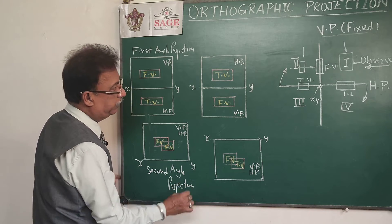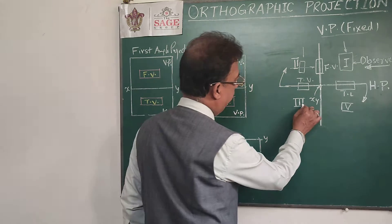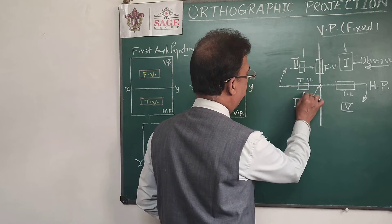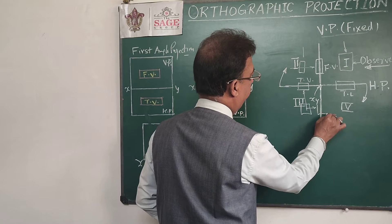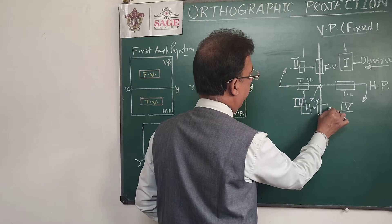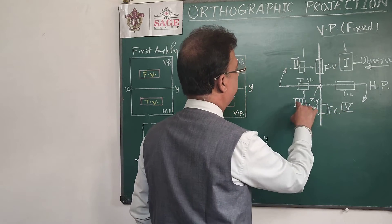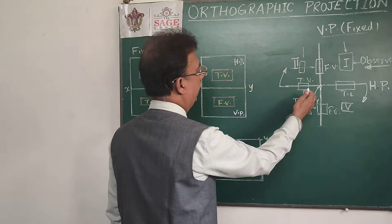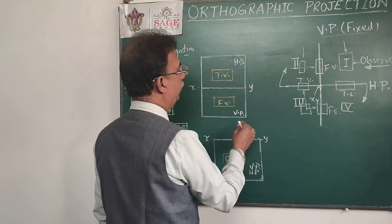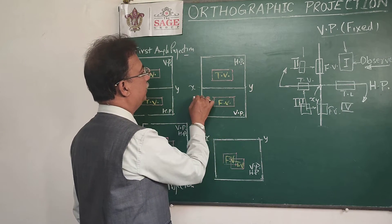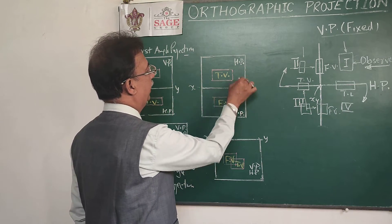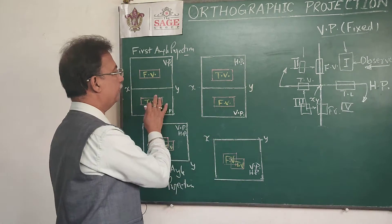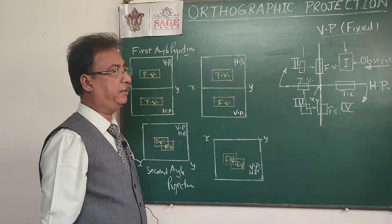When the object is in the third quadrant, the top view will be on the VP. This time the rotation is upward, so the HP goes up and the VP is below it. The layout becomes: reference line, then HP, then VP — with top view and front view in that order. This is just the reverse of first angle projection.